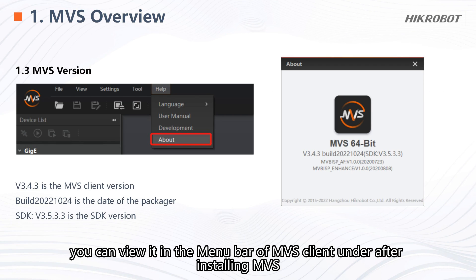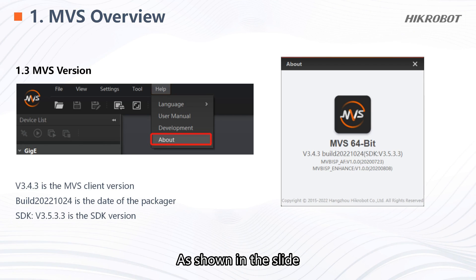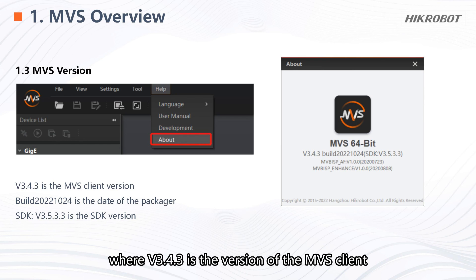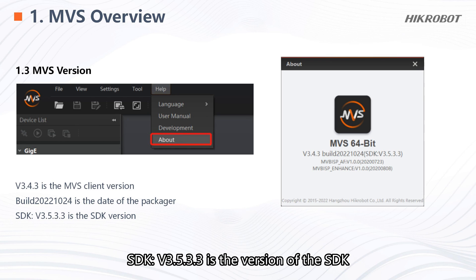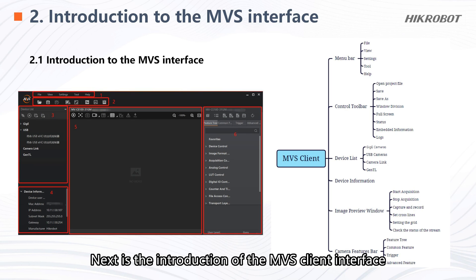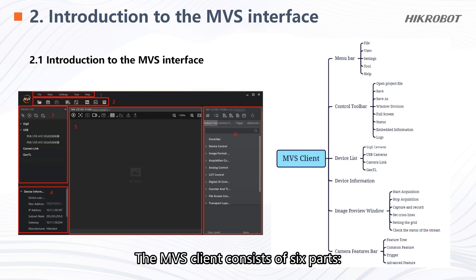For MVS version information, you can view it in the menu bar of the MVS client after installing MVS. As shown in the slide, v3.4.3 is the version of the MVS client. The build date and SDK package version information are also displayed, with the SDK version being v3.5.3.